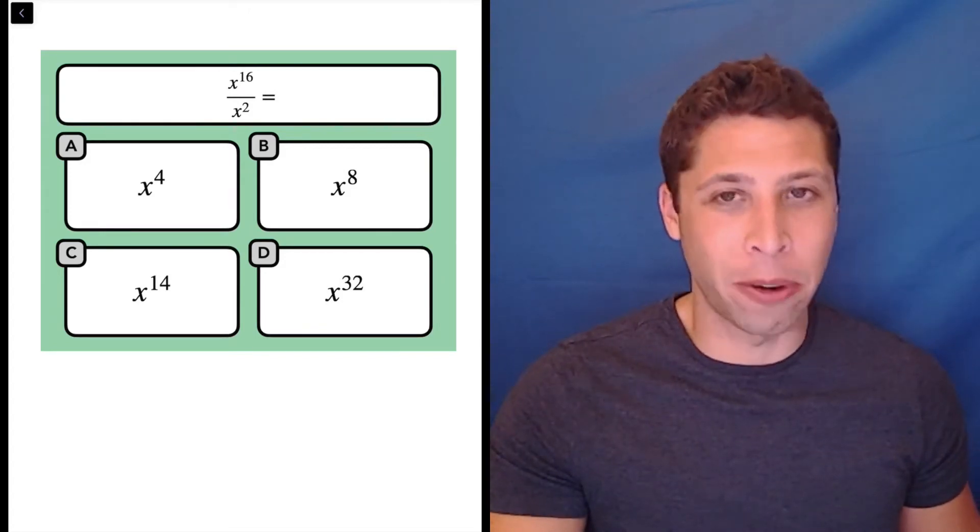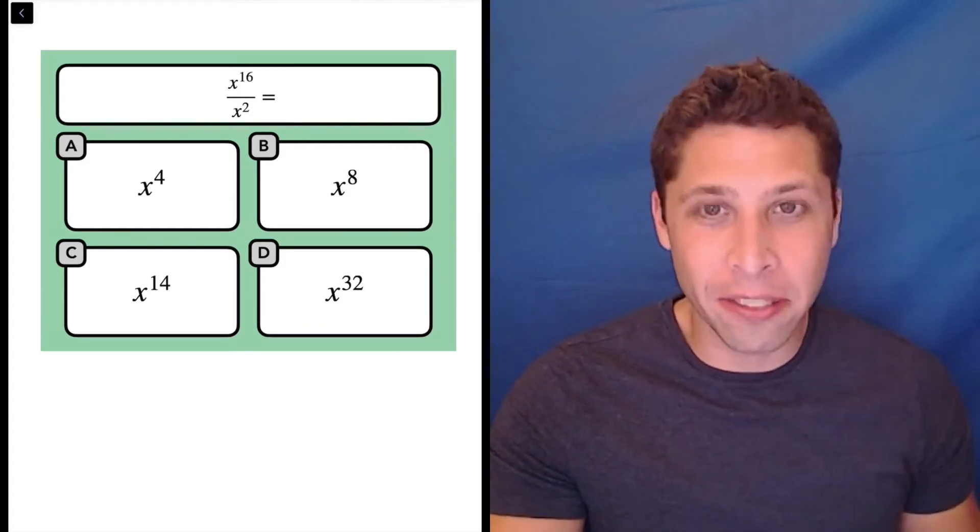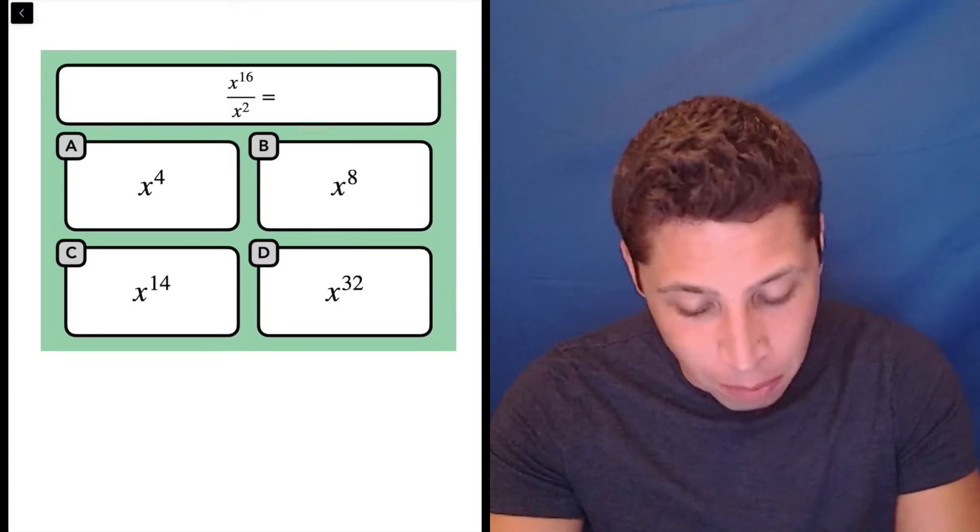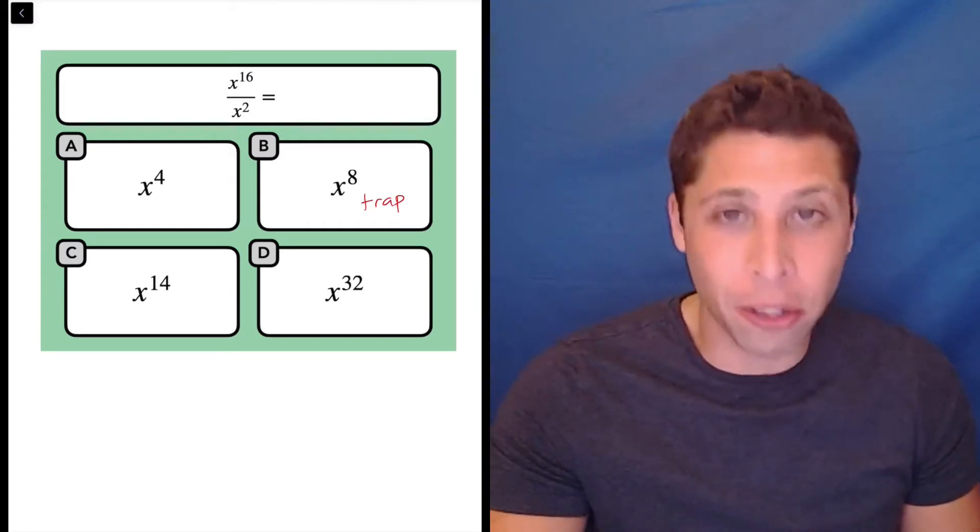A lot of people mess up this exponent rule. They just can't help themselves. They see division and they want to do 16 divided by 2, but these are exponents, not just regular numbers. So choice B is a trap.